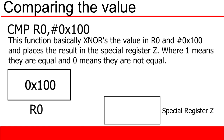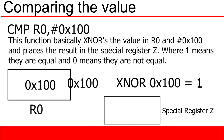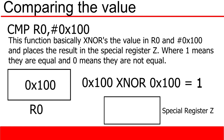Next, we are going to use the CMP or compare value function. This function will compare the value stored in R0 with the hard-coded value of X100. The logic behind the compare value function is an XNOR, in that it returns a 1 when both inputs are the same.